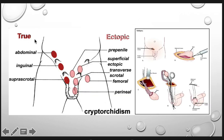These are the possible locations of the testes. If there is a true undescended testis, it could be abdominal, inguinal, or suprascrotal. If it is a pseudo or ectopic testis, it could be pre-penile, superficial ectopic, transverse scrotal, femoral, or perineal. Surgically, an incision is made in the inguinal area, the spermatic cord is identified, and it is lengthened — sometimes by cutting one of the vessels — so that it can reach as low as possible into the scrotum.